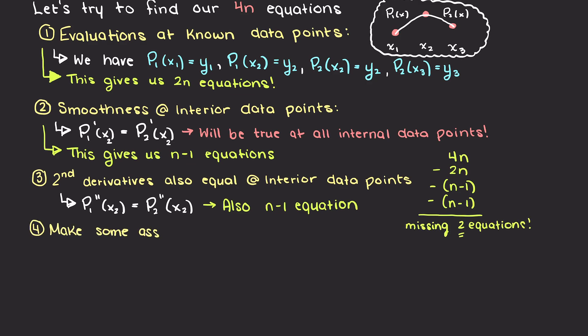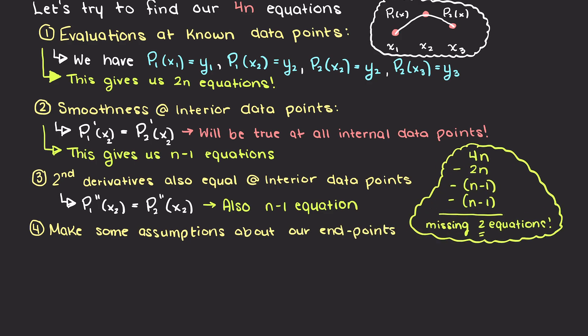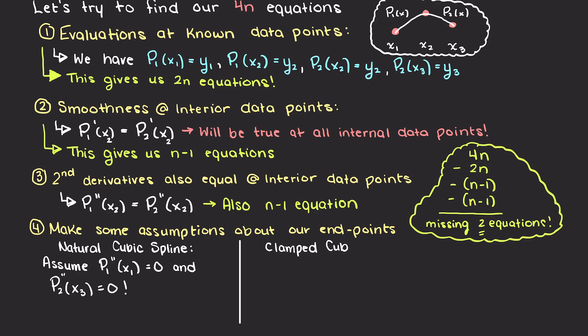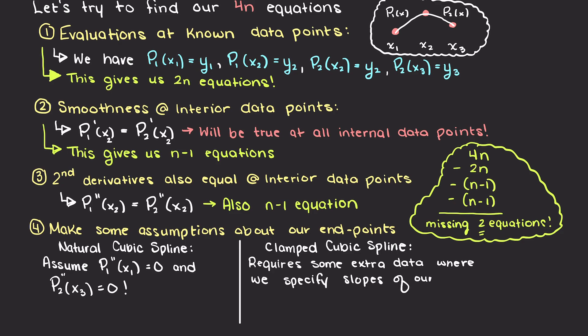The most common way to find these two missing equations is through making some assumptions about the endpoints of our piecewise spline function. The first common approach is a natural cubic spline, which ensures that the curve is continuous and has zero second derivatives at the endpoints of each interval — we get two equations by setting our first and last data points' second derivatives to zero. A clamped cubic spline requires some extra data: we specify the slopes at the first and last data points, called the clamped conditions, which ensures the curve has the desired slope at the endpoints. Other variations also exist that find two equations through various boundary conditions and constraints.